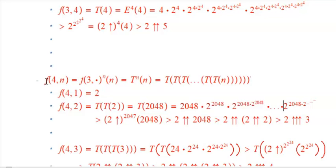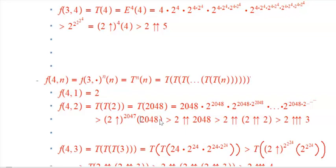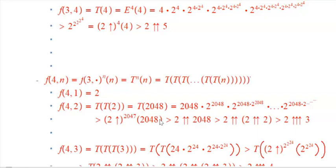Do it again and again and again. So the last term is going to be this tower of 2 to the 2048, times 2 to the 2048, times 2 — alternating 2048s and powers of 2. That's morally in the same ballpark as taking 2048 as your uppermost exponent, raising 2 to that, and then raising 2 to that 2047 more times. That's a bit more than 2 to the 2 to the 2... repeated 2048 times, which is 2 double-up 2048.